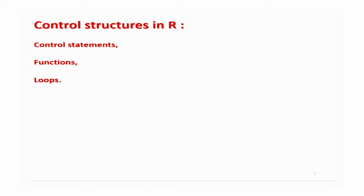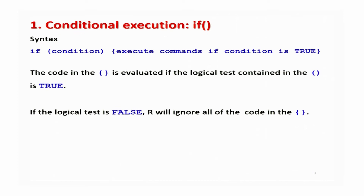As initiated in the last lecture, we are discussing control structures — control statement functions and loops — which are needed when doing programming. At this moment we are considering conditional execution. For a quick review: in the last lecture we learnt about the if condition, where you write the condition inside parentheses, and if the condition is true, whatever is inside the curly brackets is executed.